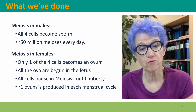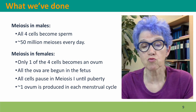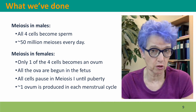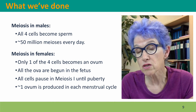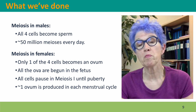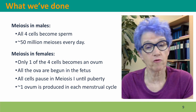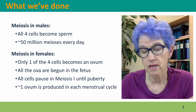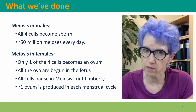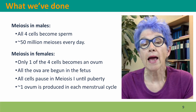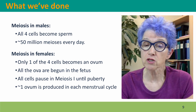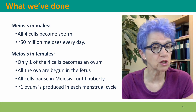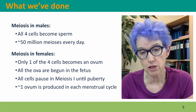In females, meiosis begins much earlier, in the fetus, but then it arrests and doesn't begin again until puberty. In males, there are millions of meioses — maybe 50 million every day depending on your age — whereas in females there's only about one meiosis completed every month.